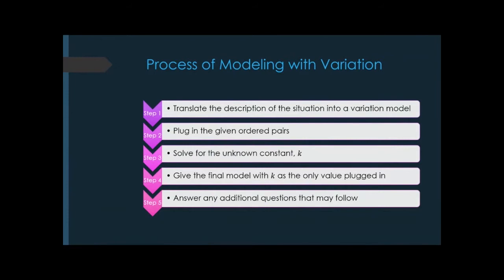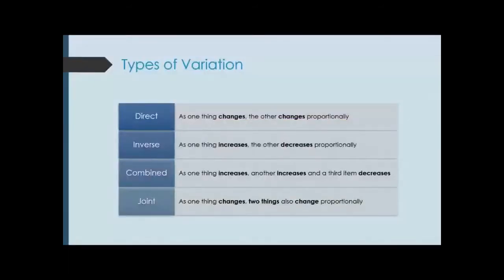There are essentially four different types of variation. Direct variation is where as one thing changes, the other changes proportionally — if one increases, the other also increases, and they change at the same rate. When you write a proportion, you have y and x in the same parts of the fraction.